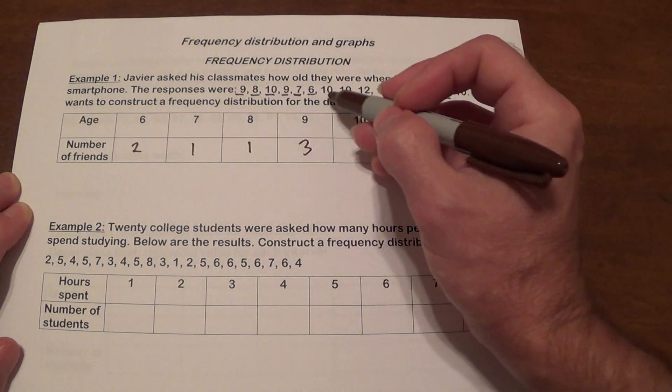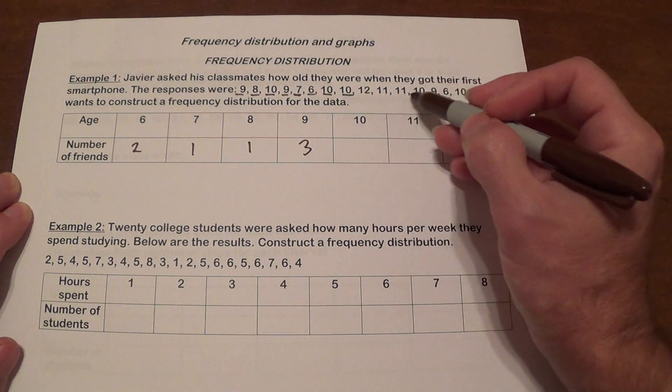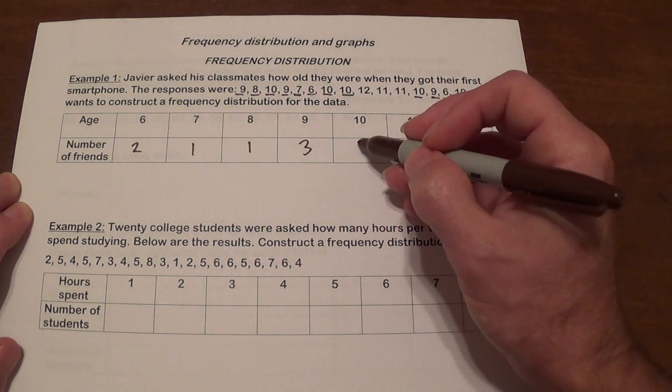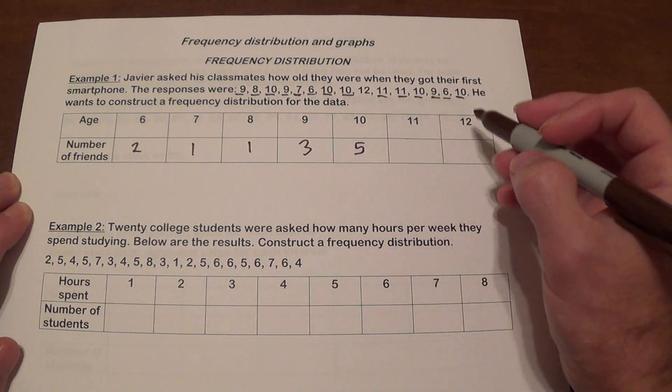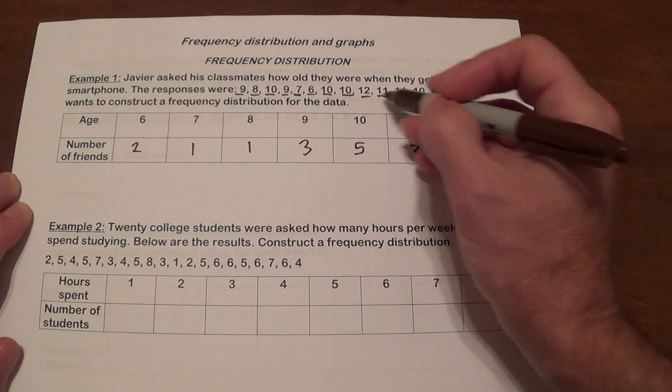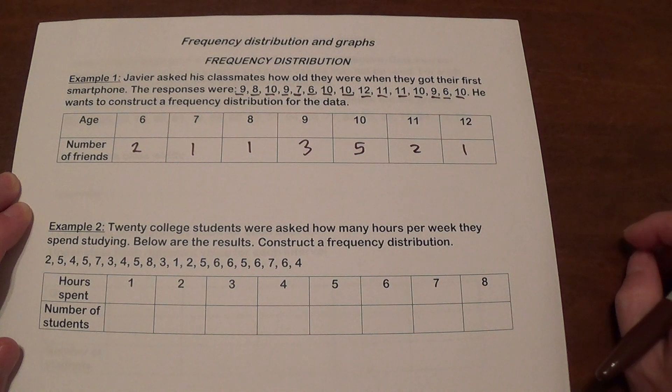Ten. Here's one. Two. Three. Four. Five. Five. Eleven. That was one. Two. And twelve. That was one. One. Okay. That's it.